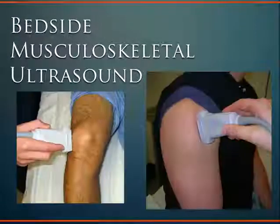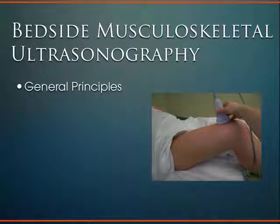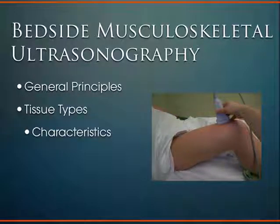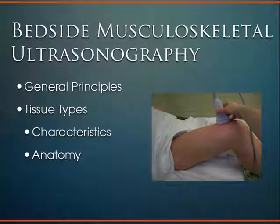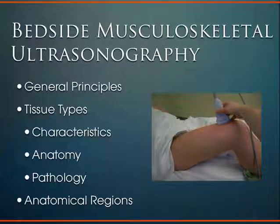We're going to talk about some concepts of musculoskeletal ultrasound — some general principles specific to MSK. I know you've already had curriculum on knobology and physics, so I'll touch on things specific to MSK ultrasound, the different tissue types you can see, the characteristics of those individual tissues, some anatomy, and the pathology. We'll go by specific anatomical regions and put it in a clinical perspective in terms of what I use in the clinic and how I might use this to diagnose injury.